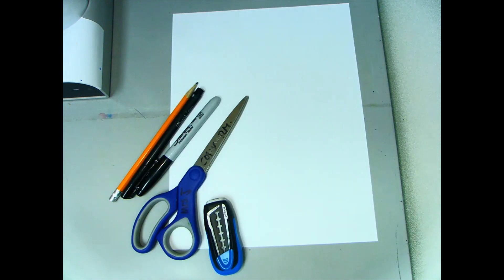For this project, you will need two pieces of paper, a pencil and eraser, scissors, a smudge proof pen, colors, and possibly a permanent marker.